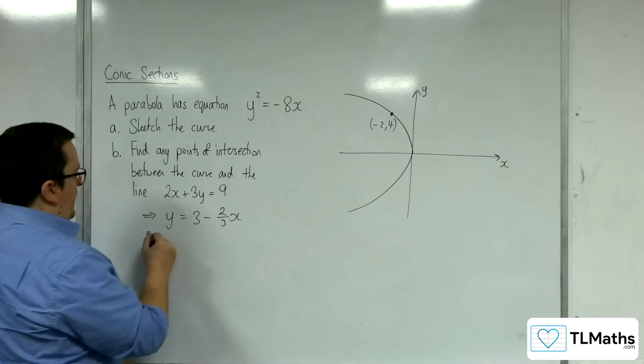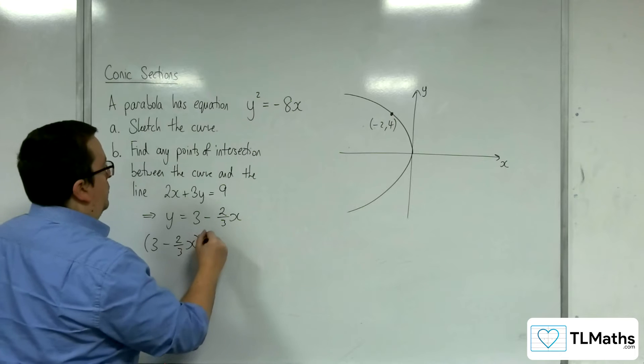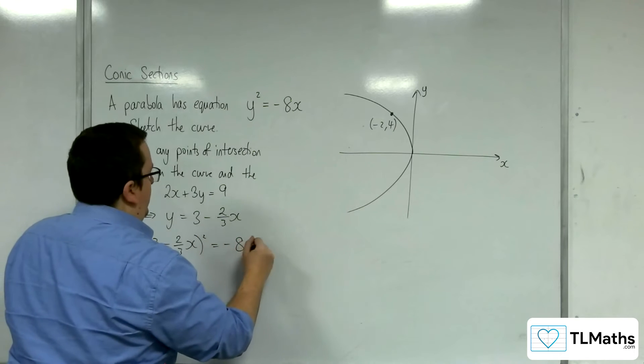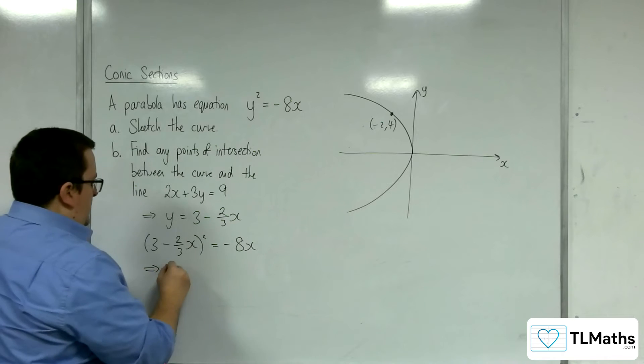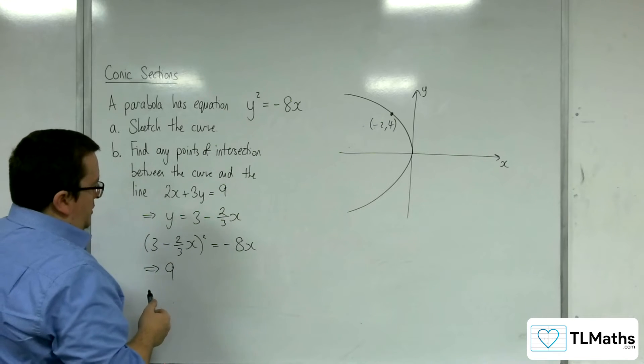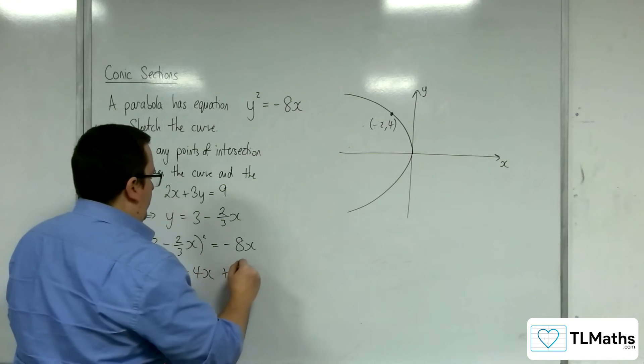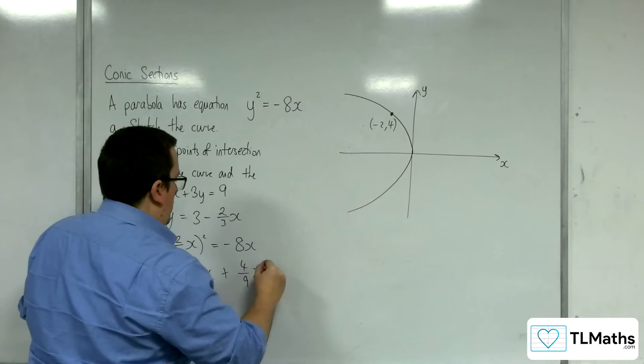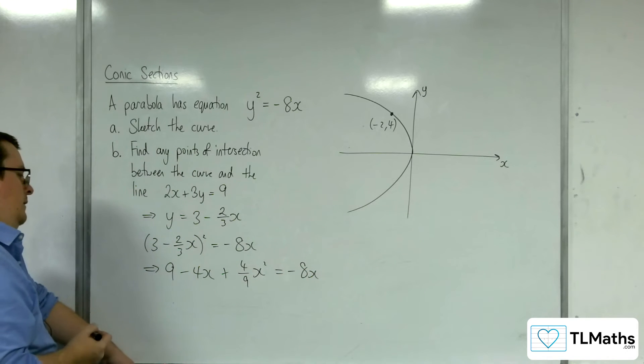Right. Then I'm going to substitute it in. So 3 take away 2 thirds x squared is equal to minus 8x. So this is 9. And 3 times minus 2 thirds is minus 2. Double that is minus 4, so minus 4x. And we've got plus 4 ninths x squared equals minus 8x.